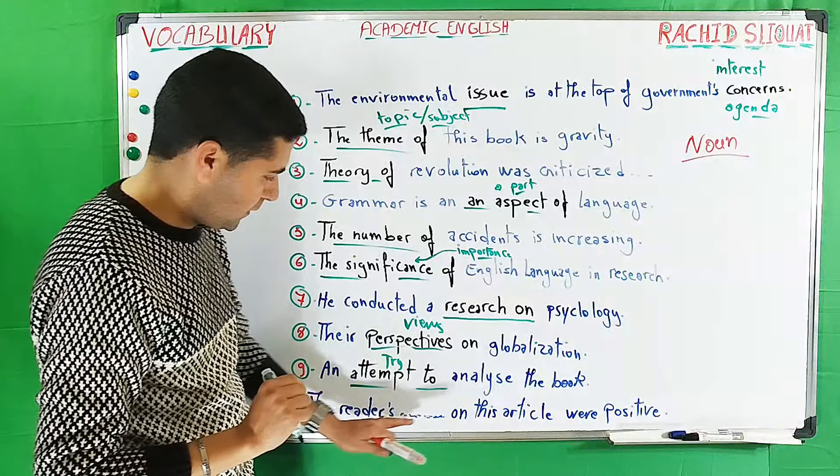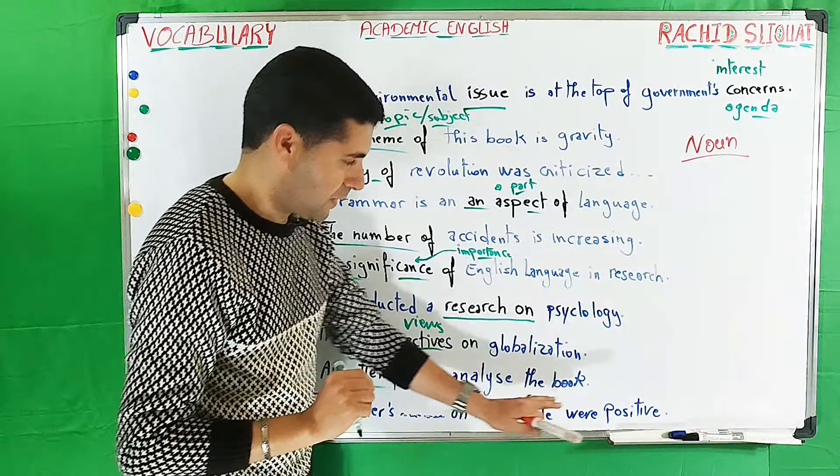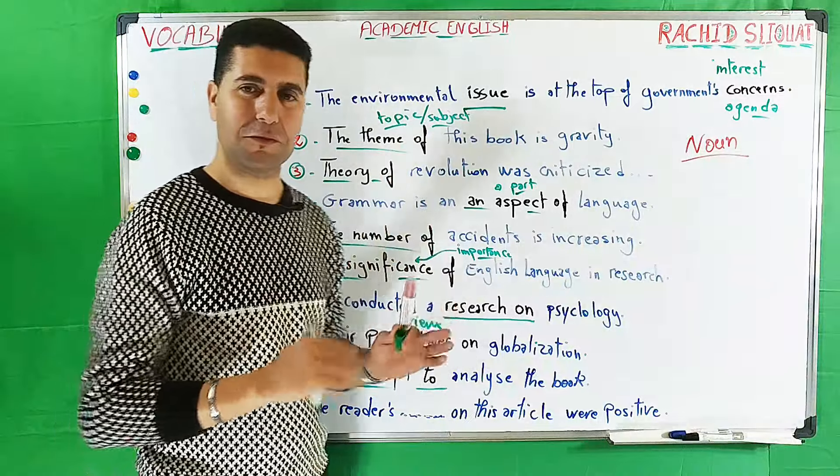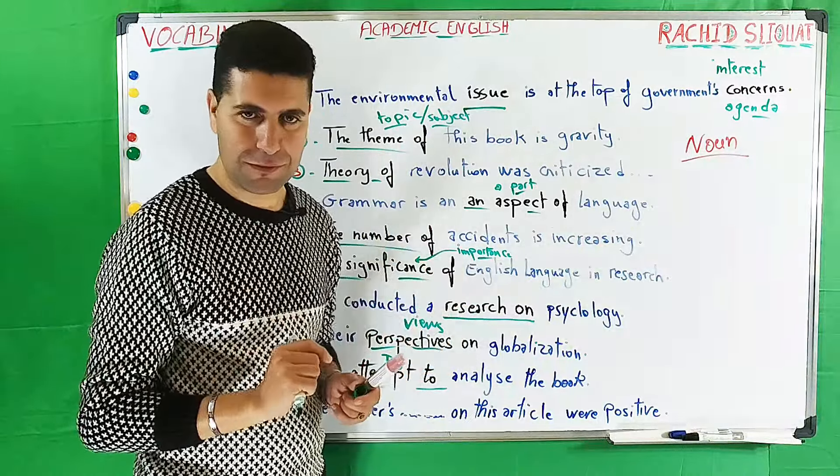Number ten: 'The readers [something] on this article were positive.' This is for you to complete with one of these expressions or noun phrases.